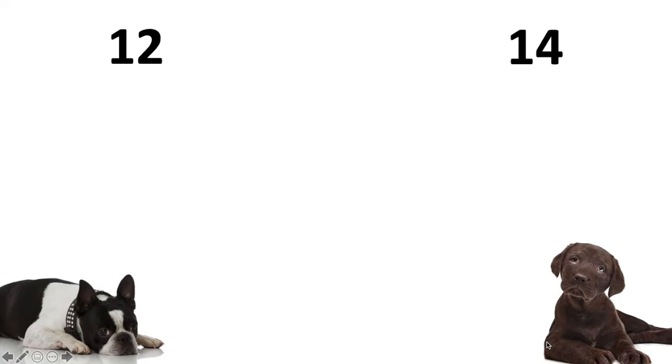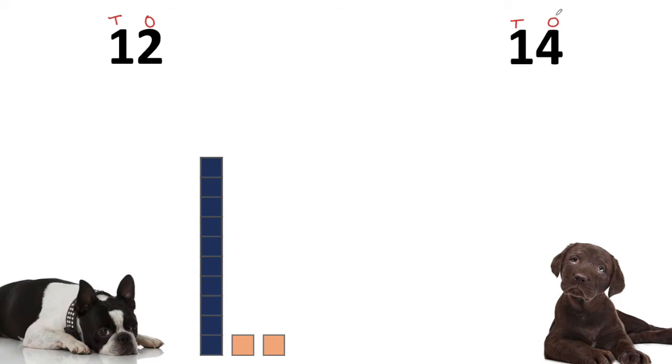Bruno and Opal want to compare 12 and 14. We know that 12 has one ten and two ones, and 14 also has one ten but it has four ones.